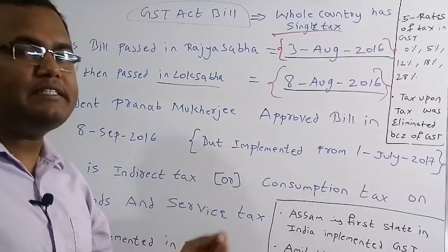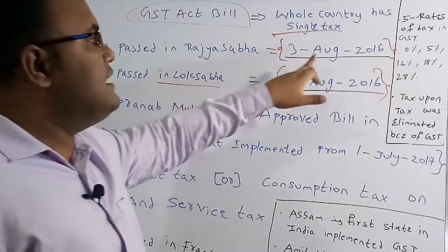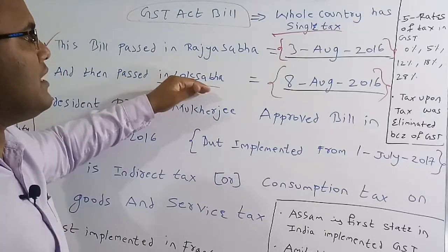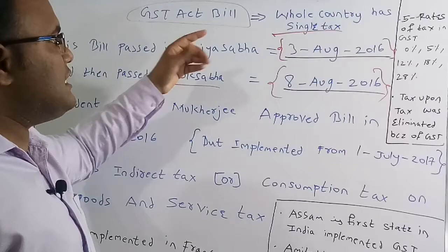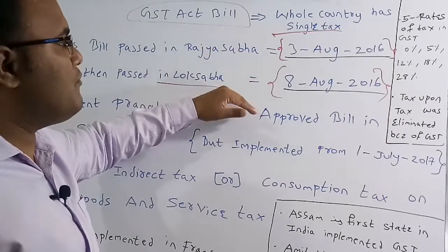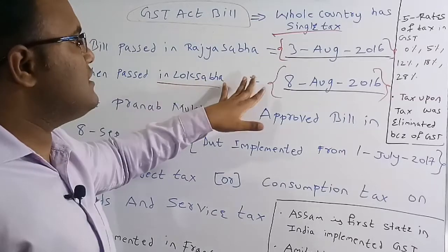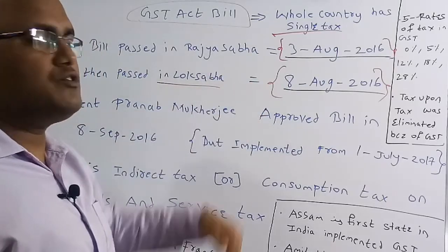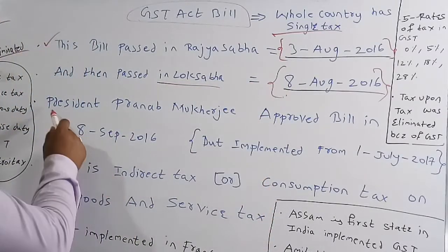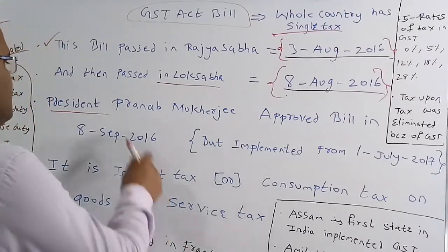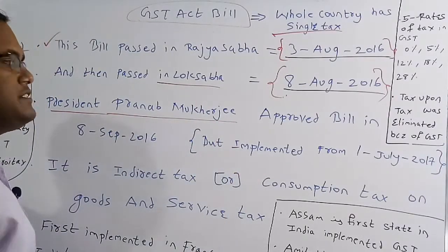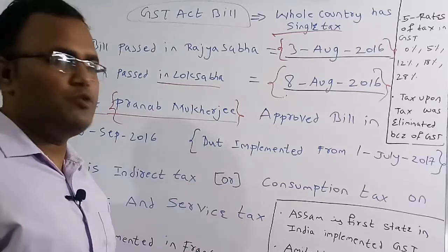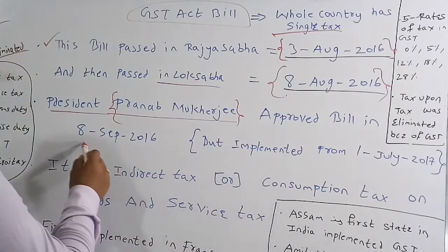If asked specifically: the bill was passed in Rajya Sabha on 3rd August 2016, and in Lok Sabha on 8th August 2016. It first went to Rajya Sabha, then to Lok Sabha. After passing in Lok Sabha, it went to President Pranab Mukherjee, who approved the bill on 8th September 2016.